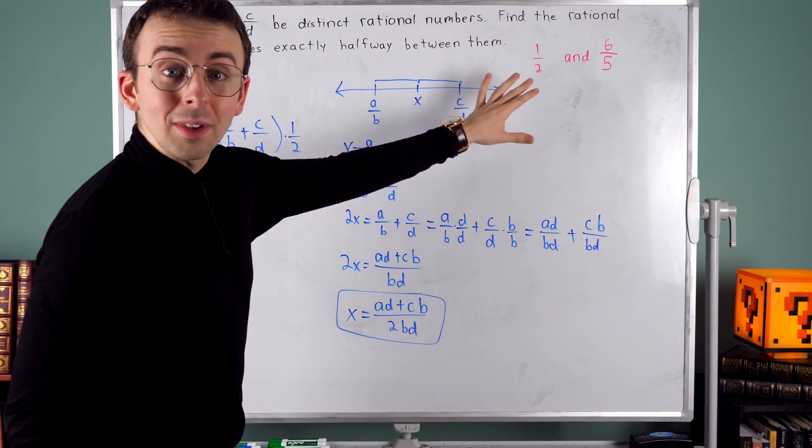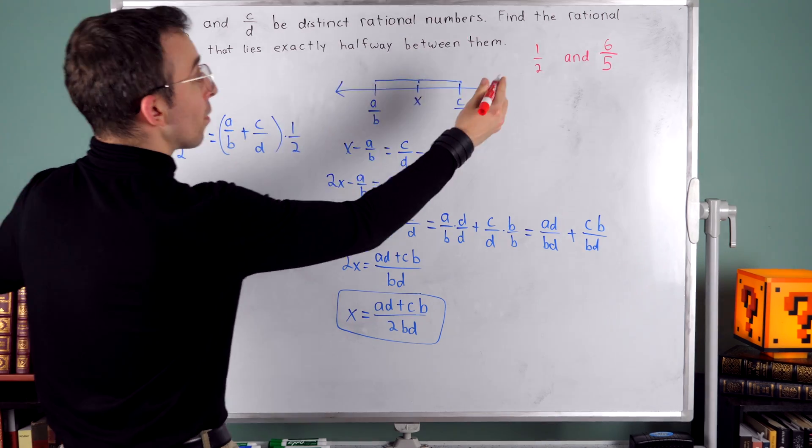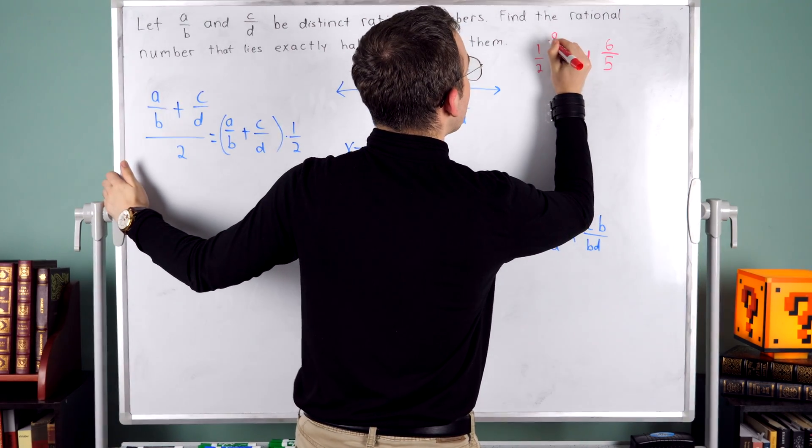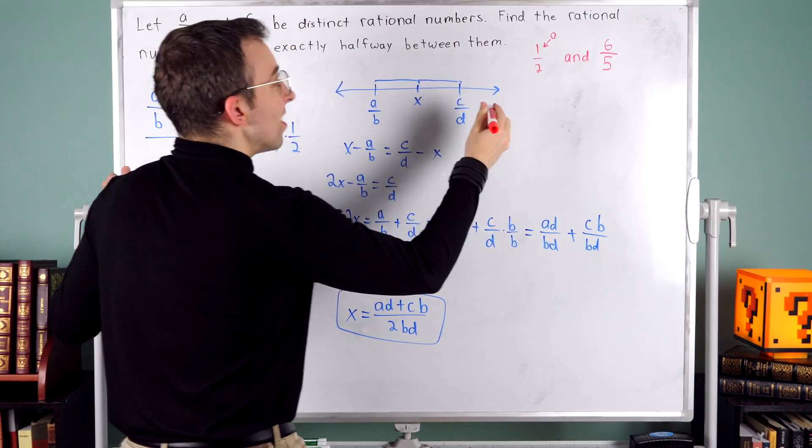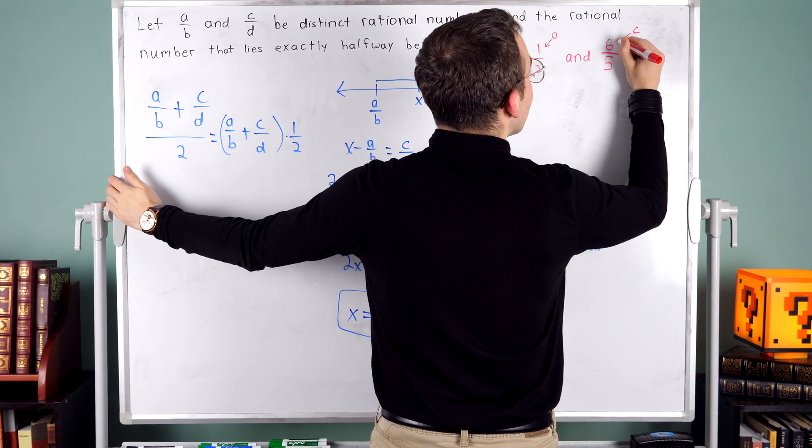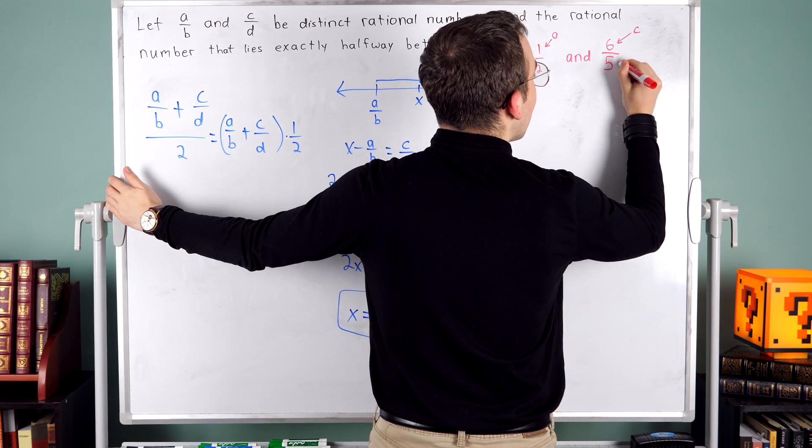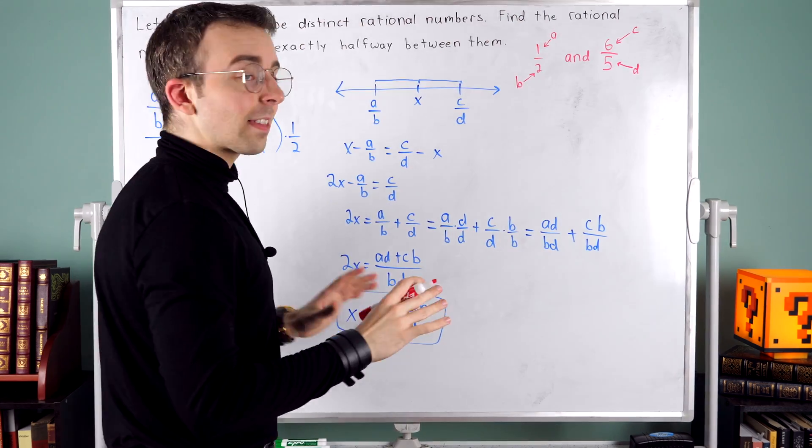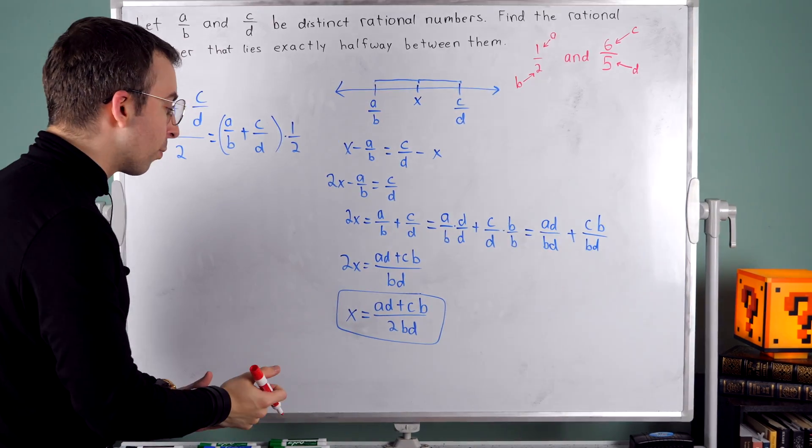A over B is one half. So one is A and two is B. Six is C and five is D. All right. Now we can apply the formula.